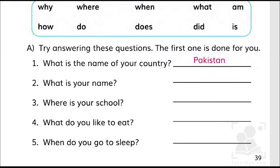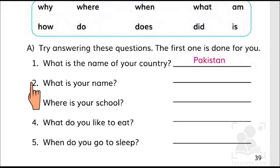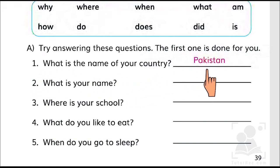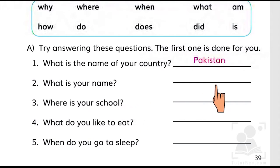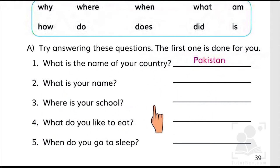Let's have a look at the exercise. Try answering these questions as the first one has been done for you. 'What is the name of your country?' — Pakistan. 'What is your name?' — you have to put your name here. 'Where is your school?' In this exercise, we are going to put some simple answers so you can get an idea of how to reply.